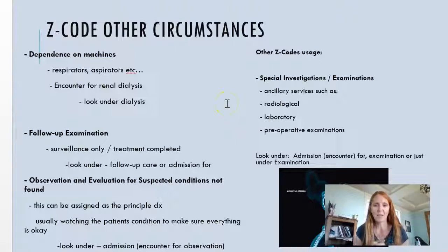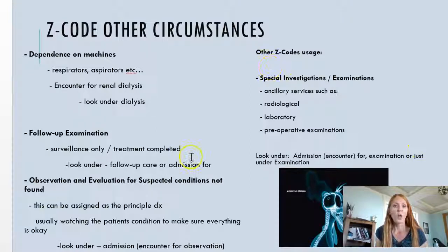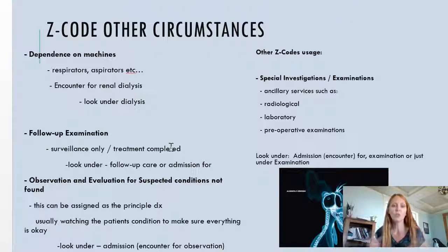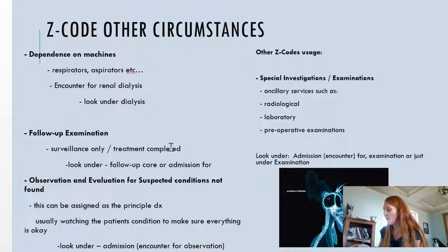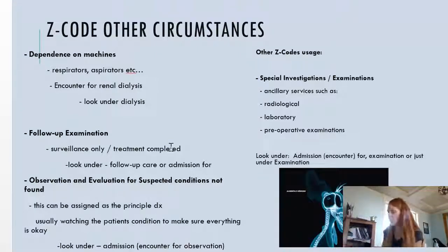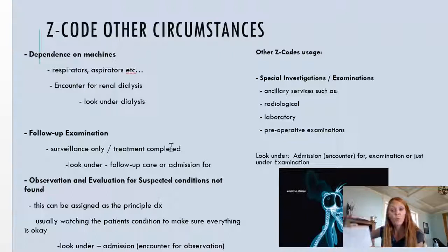There are also other circumstances. If somebody's dependent on a machine, like a patient dependent on a respirator or aspirator, or if somebody's coming in just for surveillance or a follow-up, for a pre-op exam, or just for a lab test or radiology test — all those are just encounters where the patient isn't really sick. So if all else fails, I'd recommend you take a few minutes and look through all the orange pages in your code book where the Z codes are. There aren't that many, but it's a good idea to get familiar with your choices.